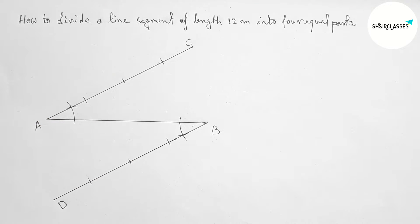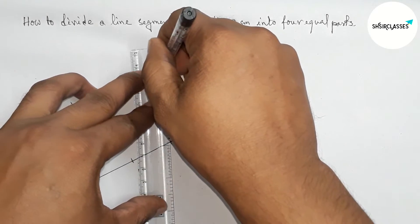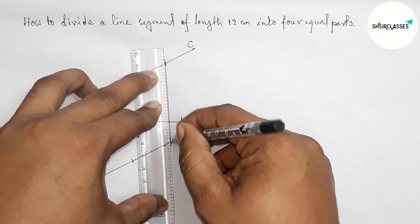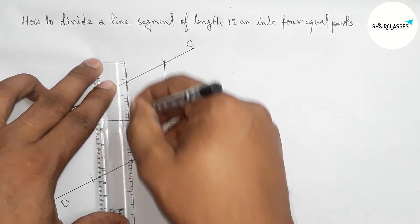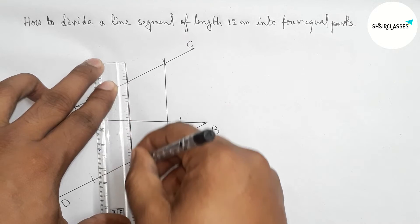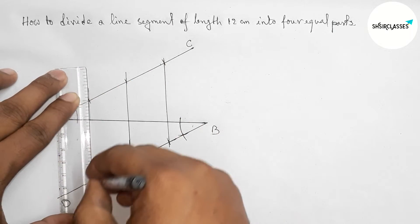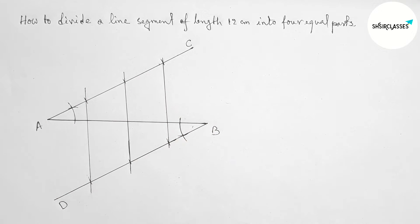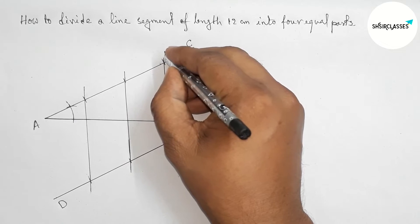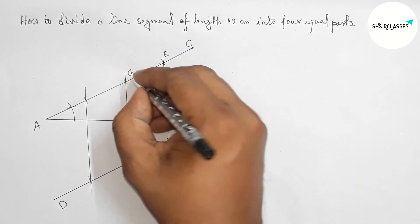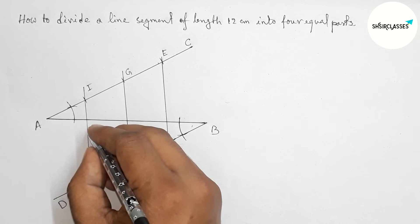Now first joining this point and this point. Next joining this point and this point. And last joining this point and this point. Now taking point here E, F, G, H, I, J, and here taking point M, N, O.